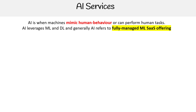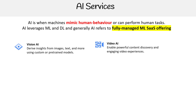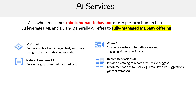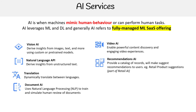Let's take a look here. We have Vision AI — it derives insights from images, text, and more, with custom or pre-trained models. Video AI enables powerful content discovery and engaging video experiences. Natural Language API derives insights from unstructured text. Recommendations AI provides a catalog of records and suggests recommendations to users. Translation dynamically translates between languages. Document AI uses natural language processing to train and simulate human review of documents.